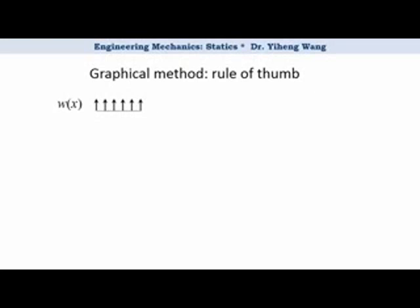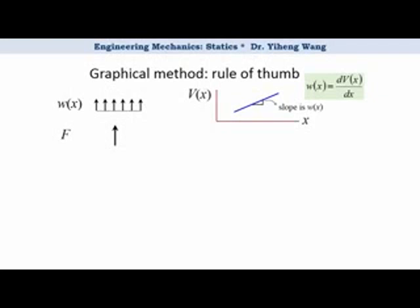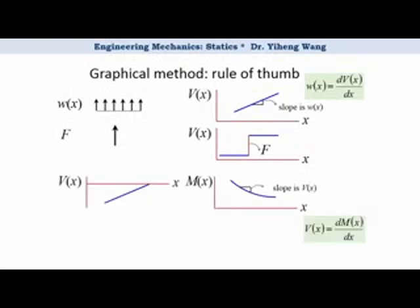As a summary for the graphical method: if there is a distributed load on the member, the load intensity function w corresponds to the slope in the shear force diagram — w(x) = dV/dx. If the load intensity is pointing upwards, it gives a positive slope and an increase in shear force. Load intensity is not always constant, but it is always true that w(x) = dV/dx. If anywhere on the member there is a concentrated load, then on the shear force diagram there is a corresponding step change. The shear force is the slope function of the bending moment function — V(x) = dM/dx. The slope anywhere on the bending moment diagram corresponds to the shear force value at that location. Lastly, an external couple moment applied on the member corresponds to a step change in the bending moment diagram.